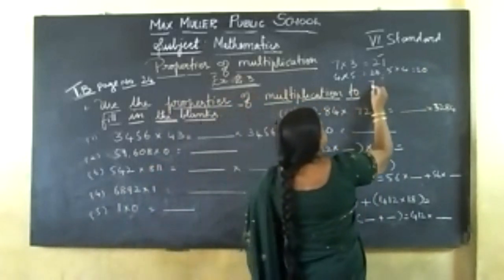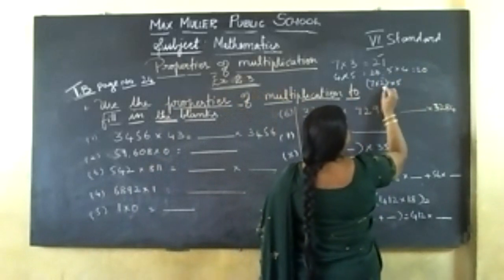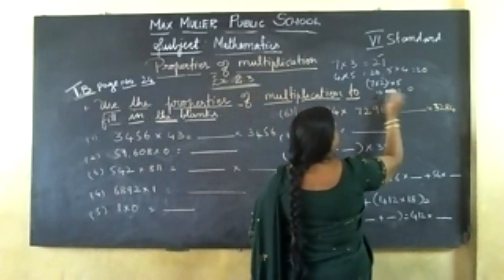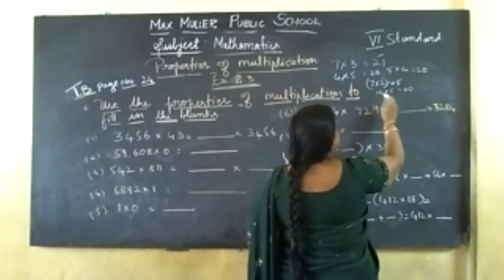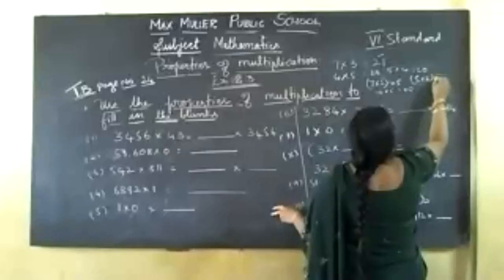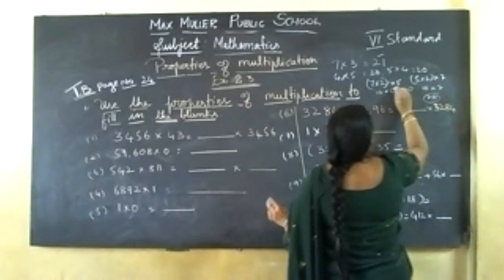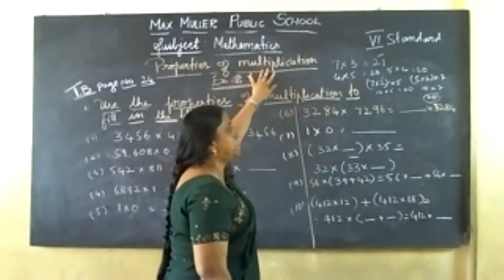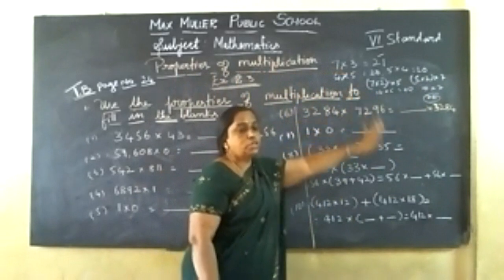Associative means grouping. 7 into 2 into 5: 7 twos are 14, 14 into 5 is 70. If you change the grouping, 5 into 2 into 7: 5 twos are 10 into 7 is 70. If you group differently, you will get the same answer. So, multiplication is closed under closure property, commutative property, and also associative property.